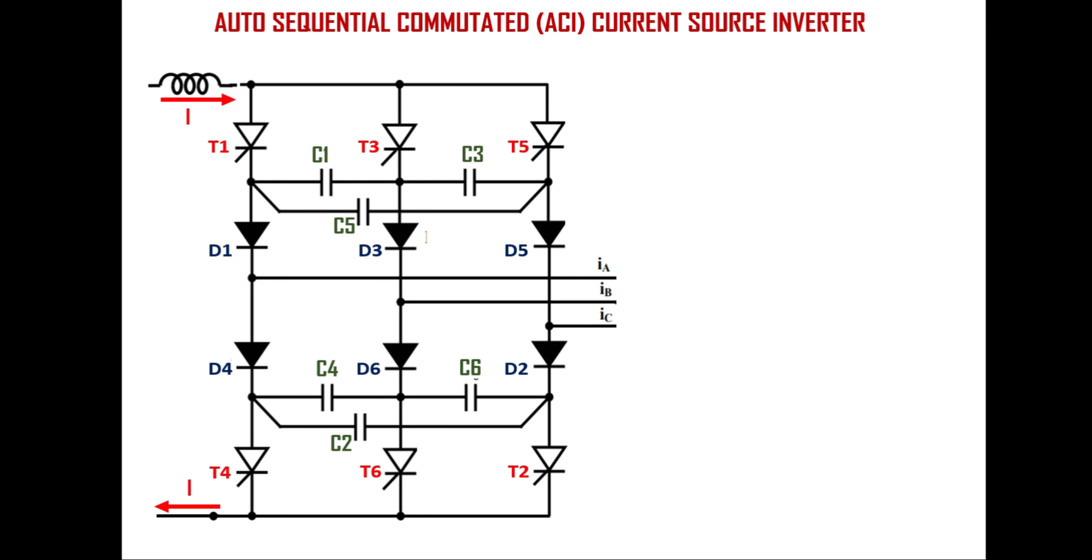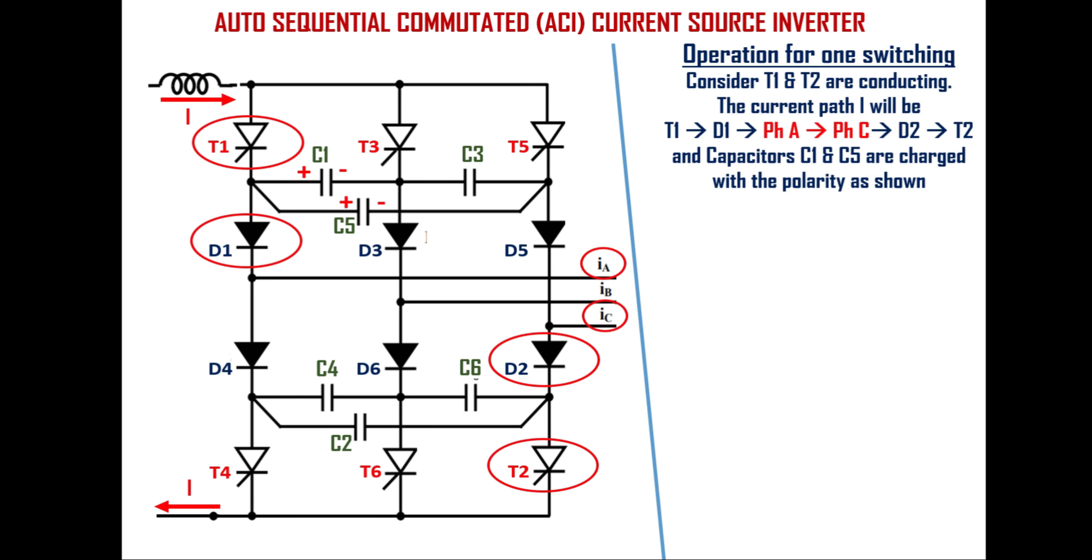In the steady state the sequence of events will be identical at each switching. So let's examine the inverter operation for one switching. Thyristors are numbered in accordance with sequence in which they are fired. Now consider thyristor T1 and T2 are conducting initially. Then source current I will flow through the path of thyristor T1, diode D1, phase A, phase C, diode D2, thyristor T2 and back to the input source.